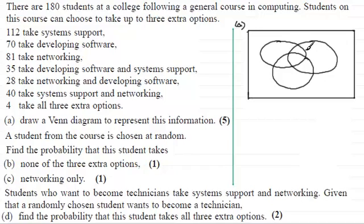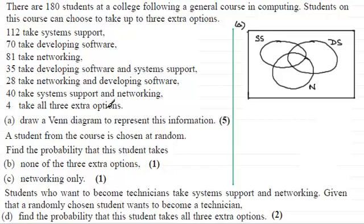We need to name them. This one first of all is for systems support — I'll denote that SS. Then developing software — we'll have DS. And then we've also got networking, so we'll call that N. For questions like this, it's a good idea to start at the bottom. It says 4 take all three extra options, so that goes in the middle — I'll put a 4 there.